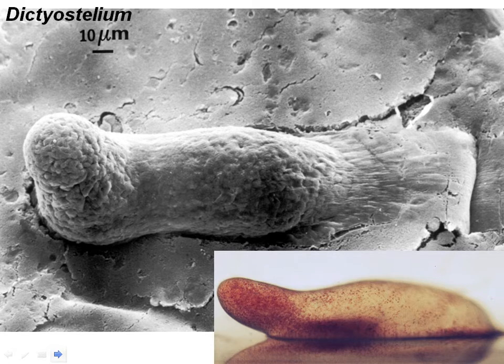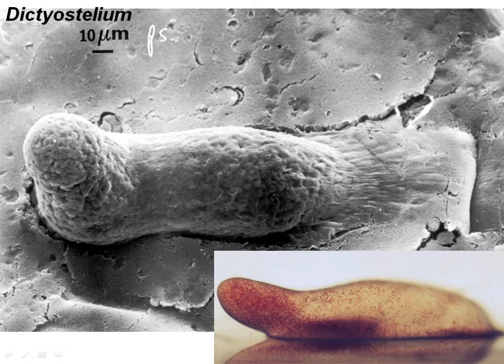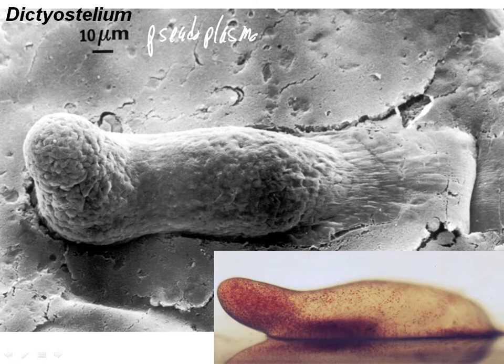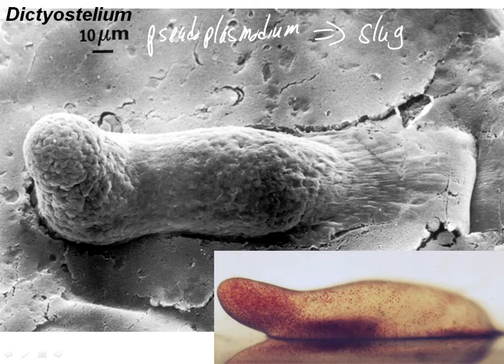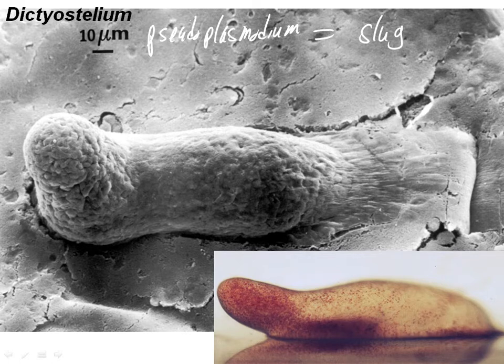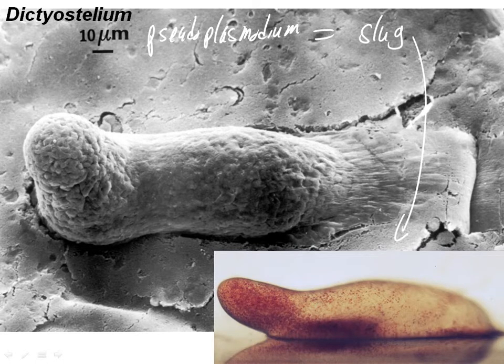Here's what happens when they aggregate, they form this pseudoplasmodium. And in English, that's also called the slug. Here it is down here in light micrograph, it's very small. You don't get a sense of the scale here. A couple hundred micrometers, probably. Maybe as long as a millimeter. Don't think they're a millimeter. We're not talking about even two millimeters in this case. So they're very small.